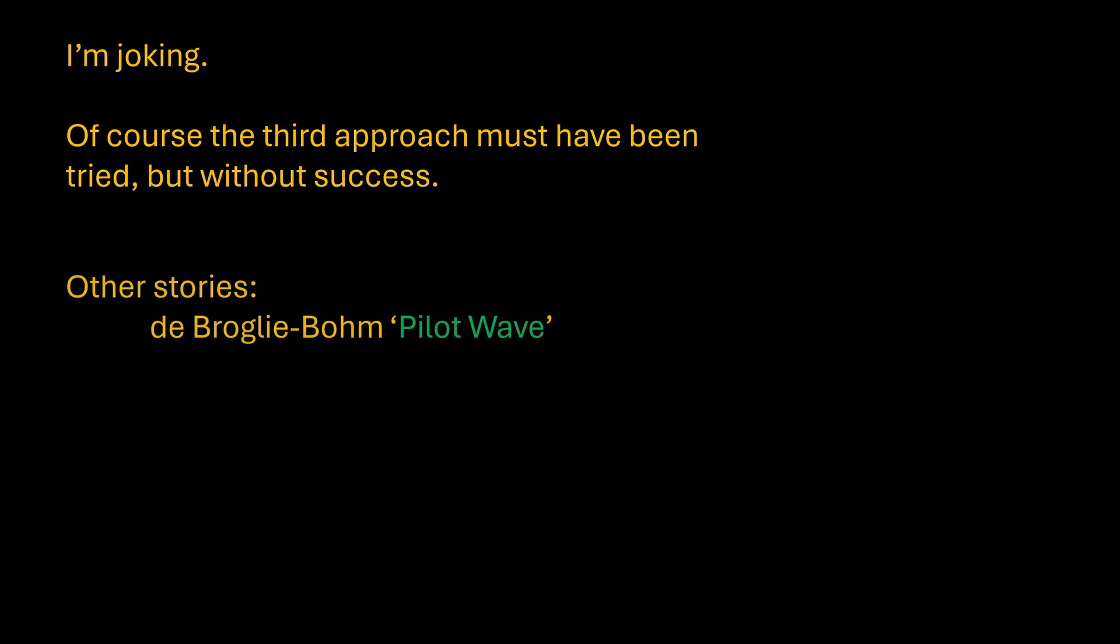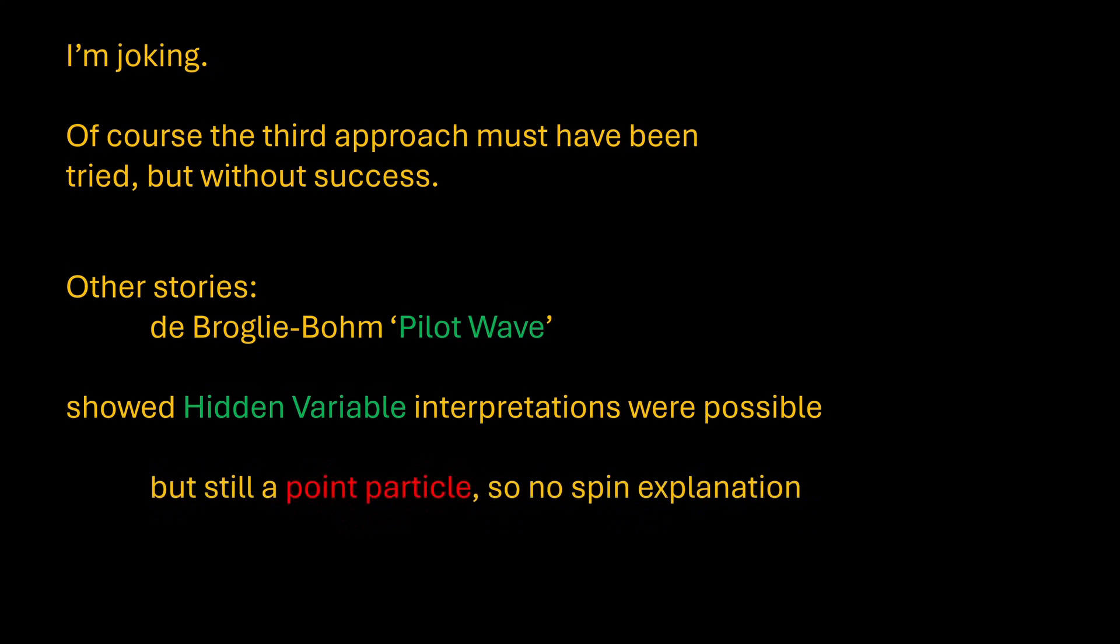Physics has tried other stories of course. The de Broglie-Bohm pilot wave theory ditches the fuzzy undefined nature of the electron and views it as a particle which actually exists. That is, it's always present somewhere but its location and velocity depends on the wave function it is immersed in. The maths is much the same as standard quantum mechanics, but the interpretation is different. But it still talks of a point particle and thus it cannot model spin angular momentum.